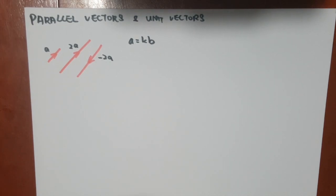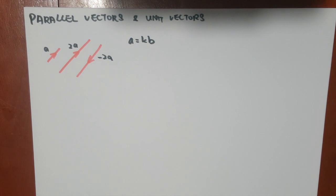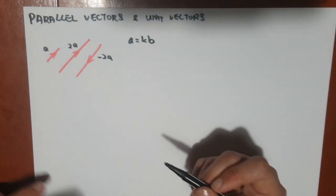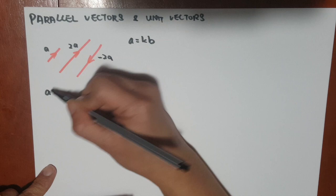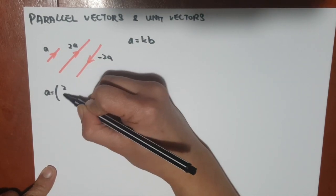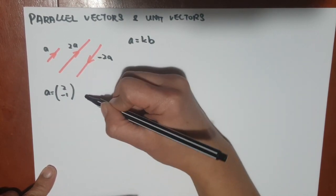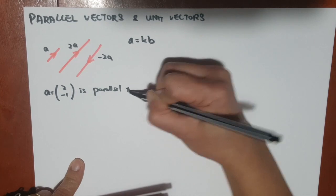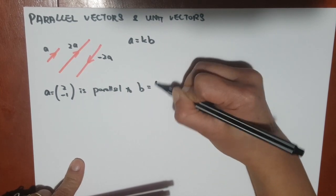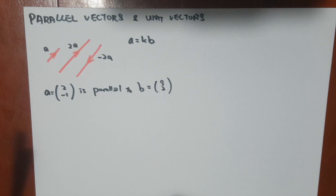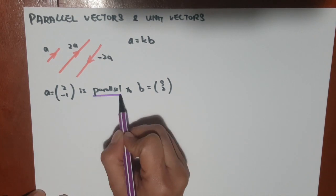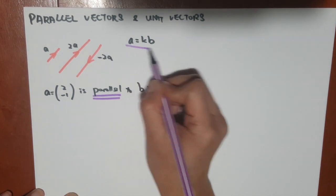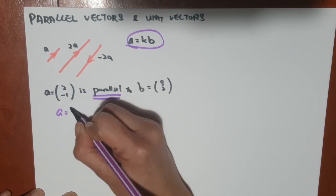So for example, if we have a question, if vector a is (2, -1) and vector a is parallel to vector b, which is (s, 2), the question asks, find the value of s. So we are trying to get what is s. We know that if two vectors are parallel, they have an equation in the form of a equals to kb.